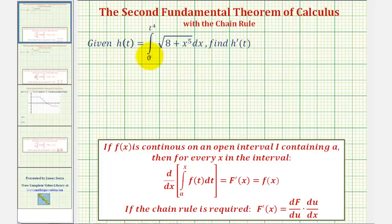We're given h of t equals the integral of the square root of the quantity eight plus x to the fifth, from zero to t to the fourth. We want to find h prime of t, or the derivative of h of t.